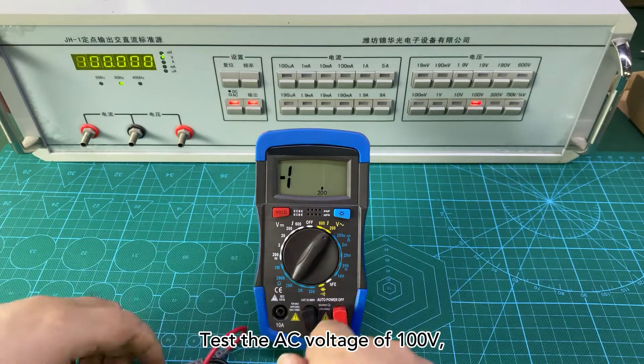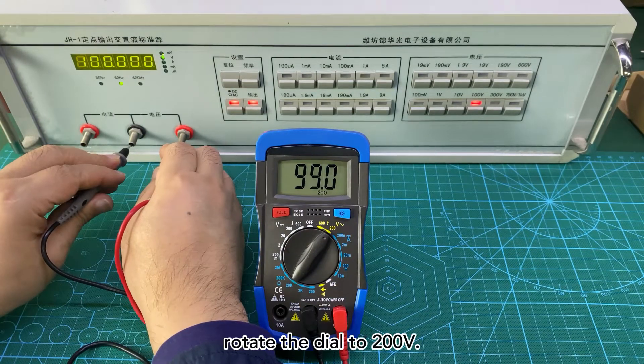Test the AC voltage of 100V. Rotate the dial to 200V.